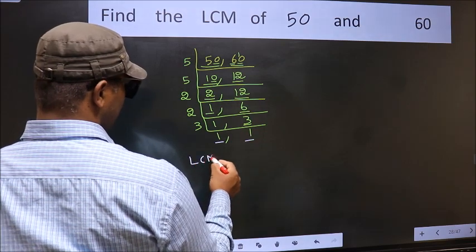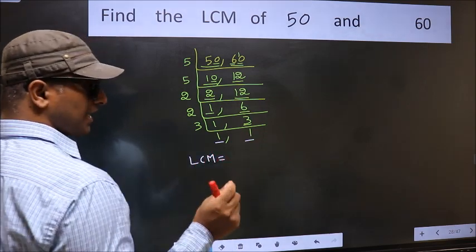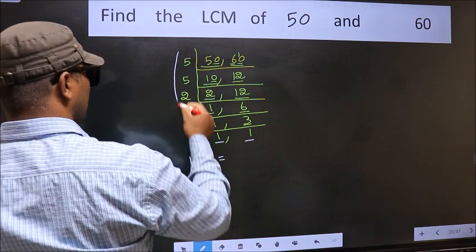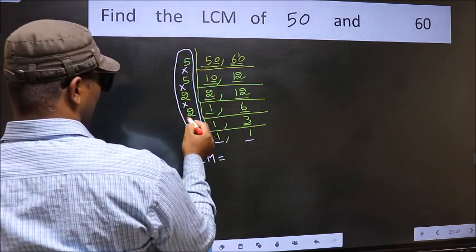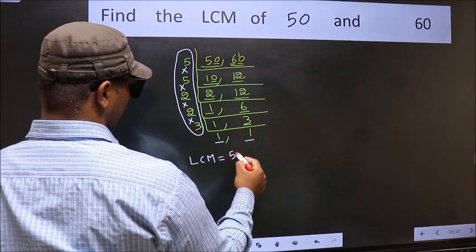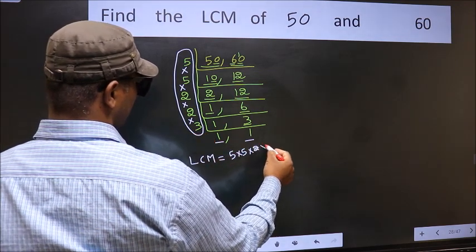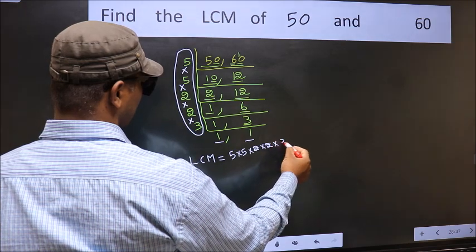So our LCM is the product of these numbers, that is 5 into 5 into 2 into 2 into 3.